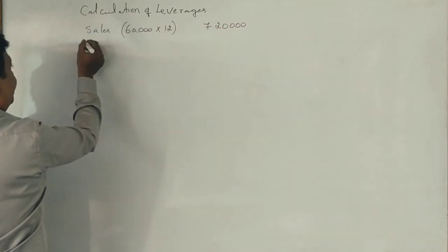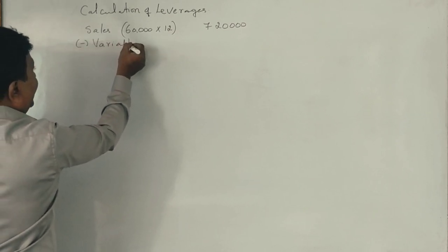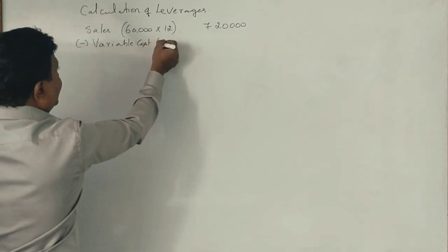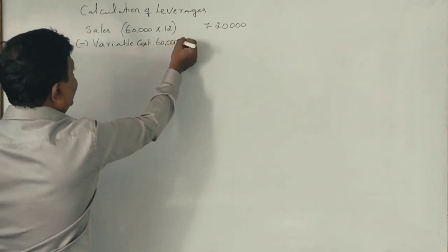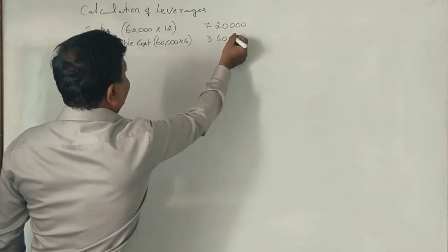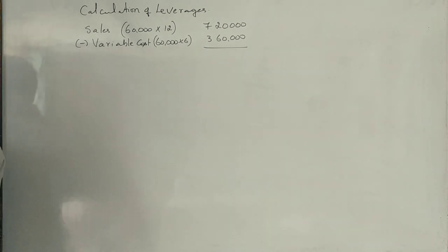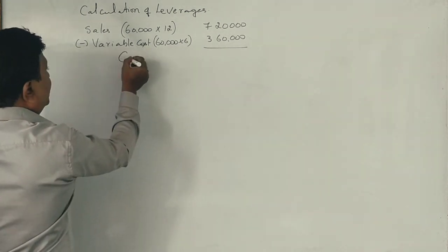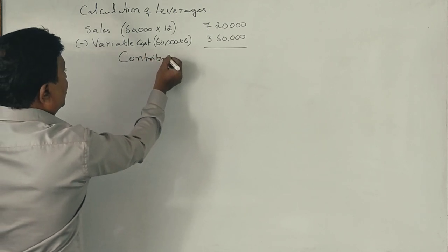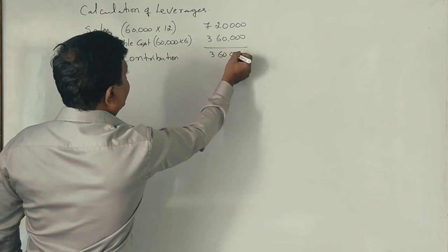So, from this, what we have to deduct? We have to minus variable cost. What is the variable cost given in the question? It is 6 rupees per unit and it comes to 3,60,000 rupees. So, from this, you will get contribution. So, contribution is 3,60,000 rupees.